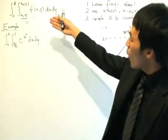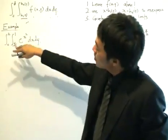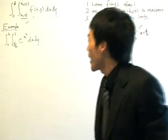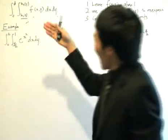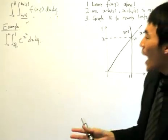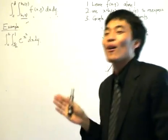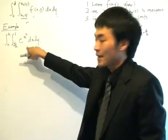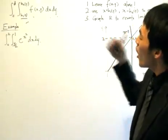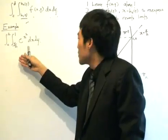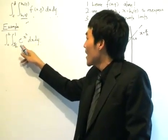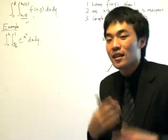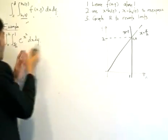Find the double integral of E to the X squared, where the limits are given. The problem initially sets out to do the partial integration in terms of X first, then in terms of Y. Now, E to the X squared is not an elementary function — you cannot readily integrate it in terms of X. But if we partially integrate it in terms of Y, it's easy because we treat X as a constant, giving us E to the X squared times Y. That is why reversing the integration order is important.